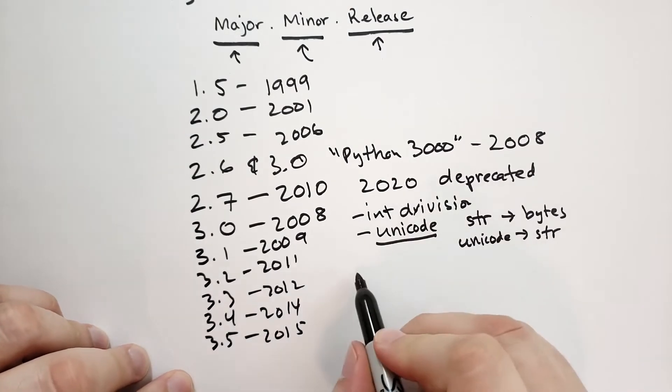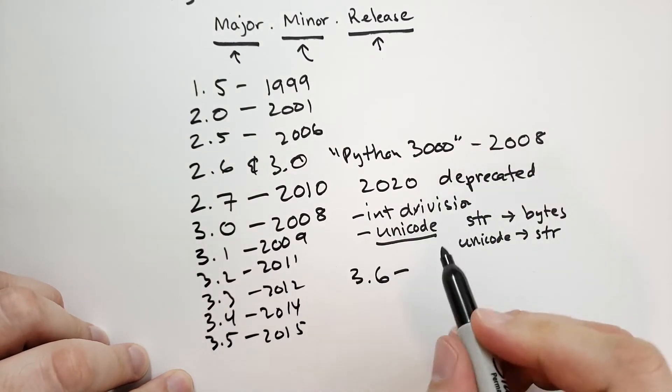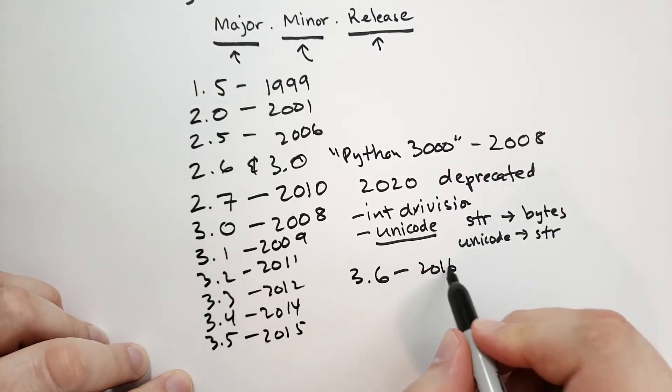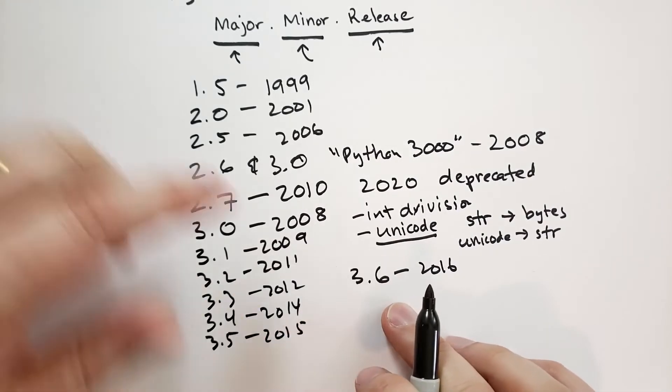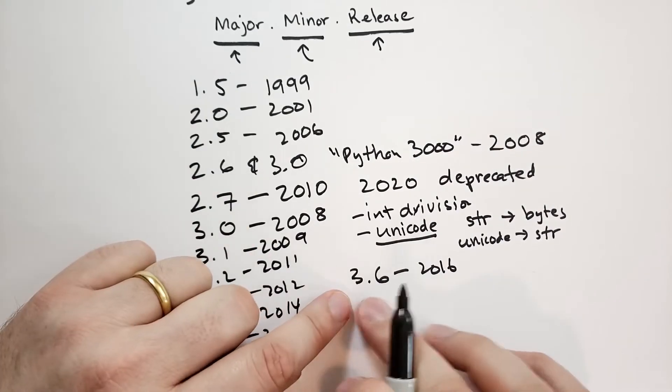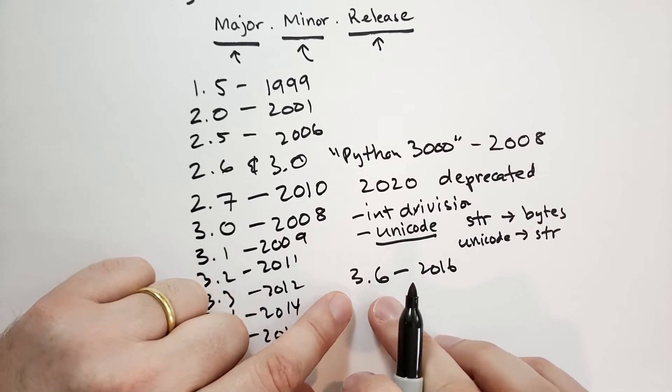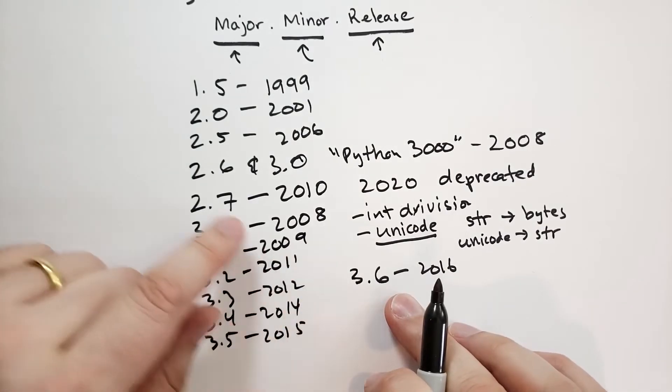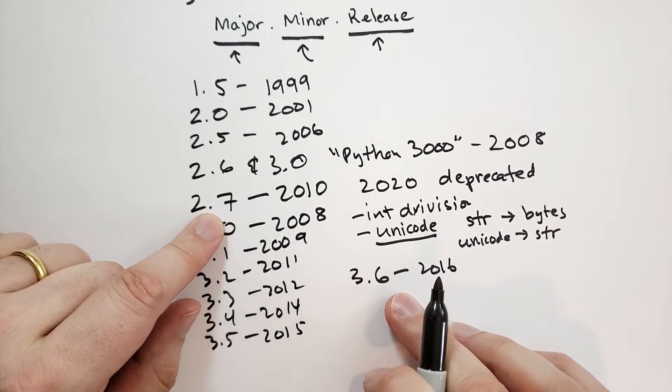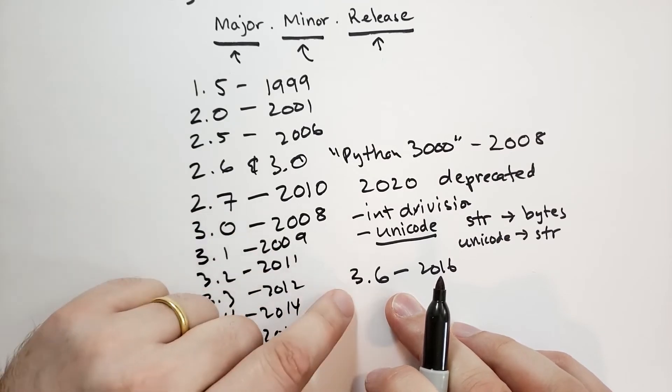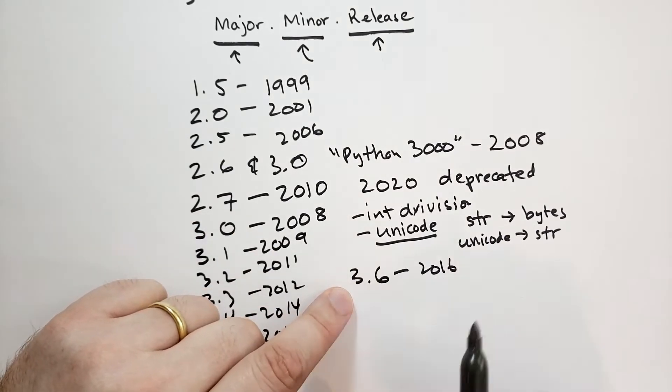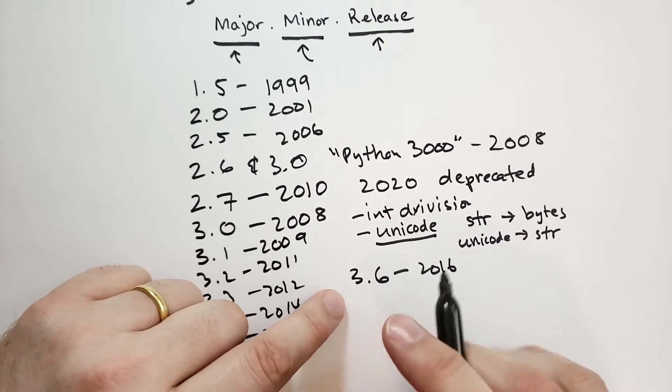And then 3.6, I'm running out of room here, 3.6 came out in 2016, and I remember 3.6, there's a lot of little new features in there. I'm not going to go into any of those features, but there's a lot of new features that came out 3.6 that made it very exciting. In fact, when 3.6 came out, a lot of people in the 2.7 community, they were stuck to 2.7, they said, we really need to go to 3.6 to get these features. Some of the features were backported, but most of them could not be.